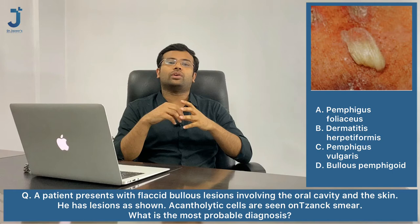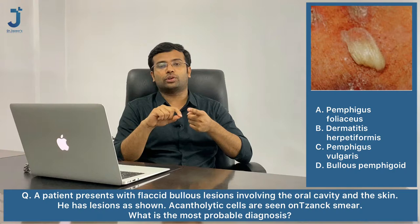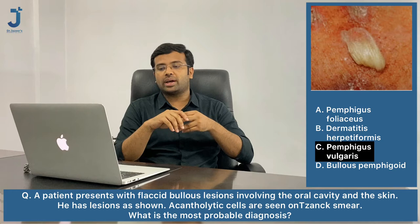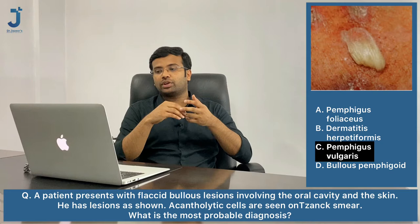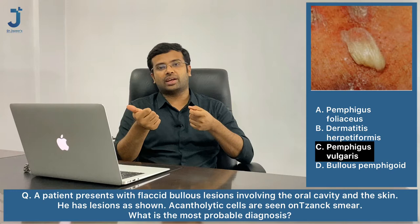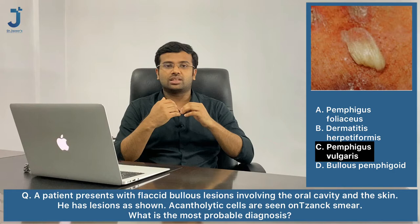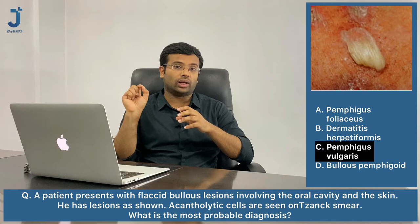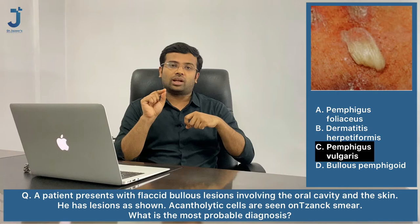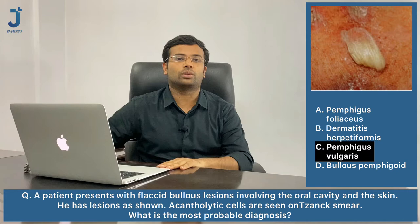Whenever in a bullous disease oral mucosal erosions are given along with a flaccid bulla, the most likely defect is going to be in desmoglein 3 and desmoglein 1, and it is going to be pemphigus vulgaris. In pemphigus foliaceus, oral mucosal involvement is not seen, whereas in pemphigus vulgaris, oral mucosal involvement may be the first symptom. Dermatitis herpetiformis and bullous pemphigoid are sub-epidermal blistering diseases. Acantholytic cells are keratinocytes that become rounded cells with a large nucleus and a perinuclear halo after detachment. So the answer is pemphigus vulgaris.